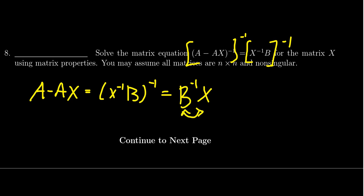So we want to solve this matrix equation for X. So I would then add AX to both sides. This then gives us that A is equal to AX + B^(-1)X.